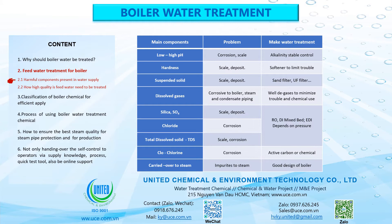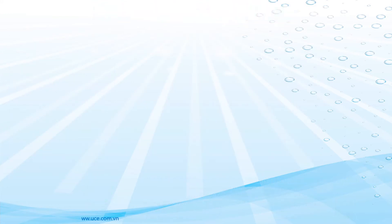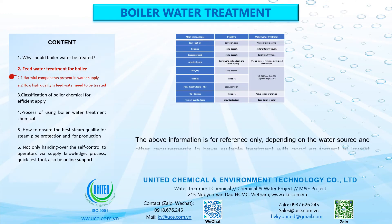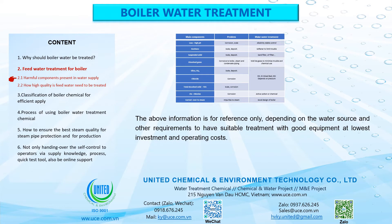8. Main component: Chloride. Problem: corrosion. Water treatment should include active carbon or chemicals. 9. Main component: Carried over to steam. Problem: impurities to steam. Water treatment should include good boiler design. The above information is for reference only; depending on the water source and other requirements, a suitable treatment with good equipment at the lowest investment and operating costs should be selected.